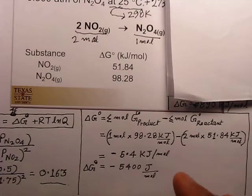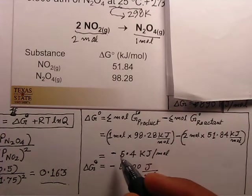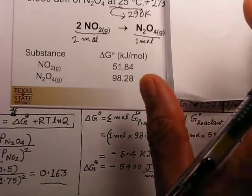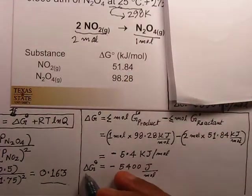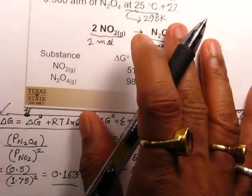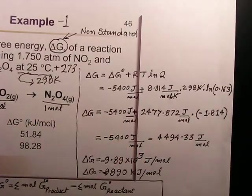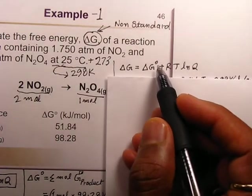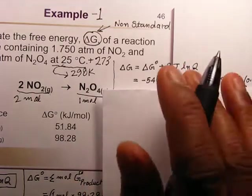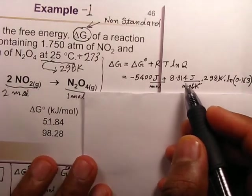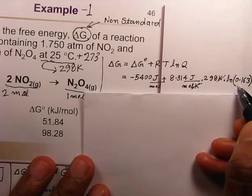Solving that gives delta G° equal to minus 5.4 kJ/mol, or minus 5400 J/mol. Now we know both delta G° and Q, so we place these values into the equation: delta G equals delta G° plus RT·ln(Q), where T is 298 Kelvin and ln(Q) is ln(0.163).